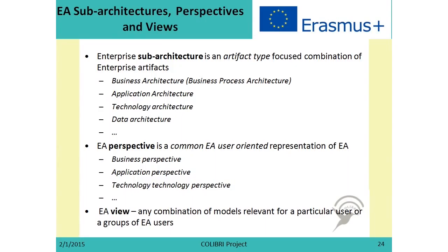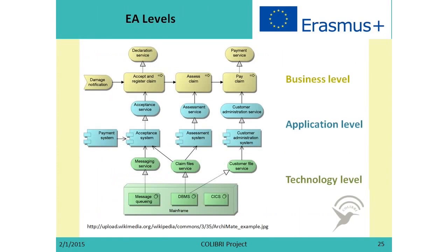When we speak about sub-architectures, we mainly refer to a specific type of artifact. When speaking about perspectives, we usually think about common users of Enterprise Architecture. But there is also the possibility that users form a group not belonging to any prescribed common users, and then we speak about an Enterprise Architecture view, which is any combination of artifacts useful for a specific individual or group. Another term used is Enterprise Architecture levels, and one way to describe these levels is to introduce the business level, which corresponds to the business perspective.